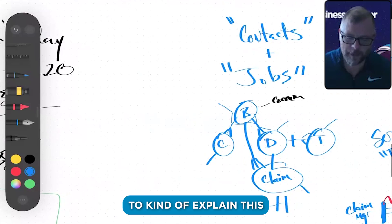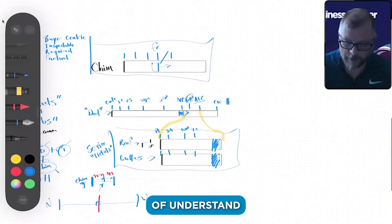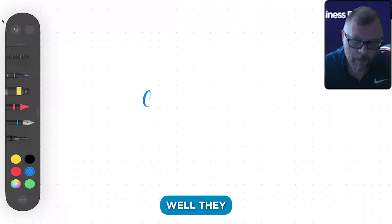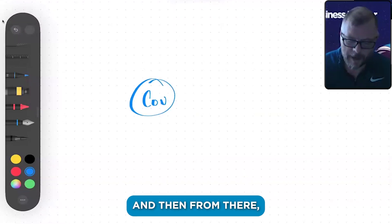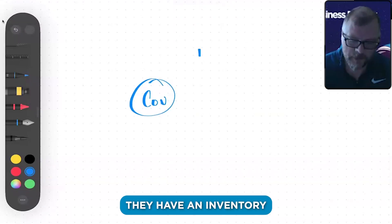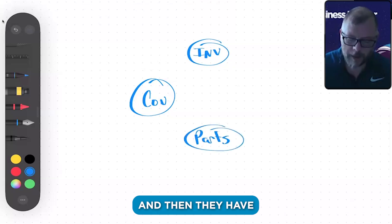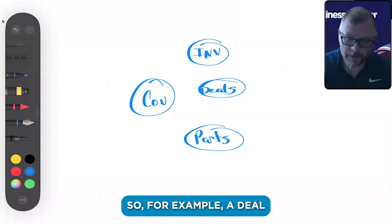Another easy way to kind of explain this—we all kind of understand—is maybe say a car dealership. If a car dealership had a CRM, well they would have contacts, and then from there they have an inventory of cars, and then they have parts, and then they have deals.